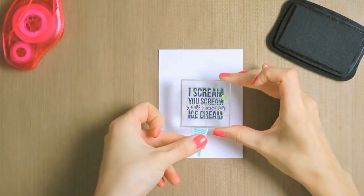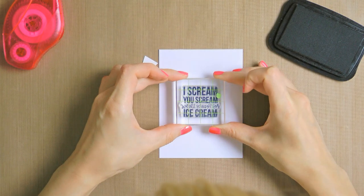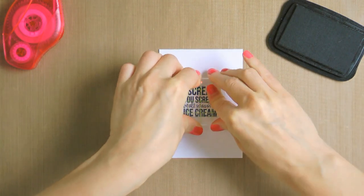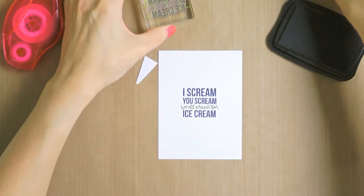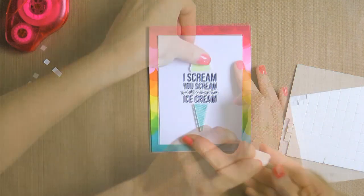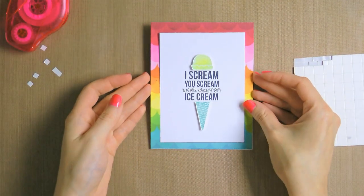Now because I knew I was going to add an ice cream cone below and an ice cream above the sentiment, I didn't stamp it directly centered. I stamped it more towards the top of the card. I then used foam adhesive and adhered the ice cream pieces to my project to give it some dimension.